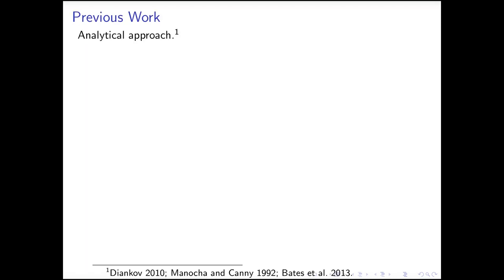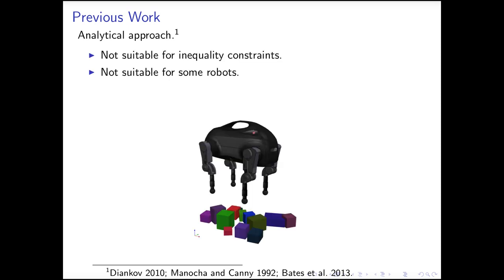There has been a lot of research on solving IK problem. First, there is the analytical approach, that if we only have equality constraints, and if the robot structure is simple, then we can solve the IK problem in closed form. The shortcoming of this approach is that it is not suitable when we have inequality constraints, or when the robots are complicated. For example, if we want to find the posture of the little dog standing on their stepping stones, the region of each stepping stone is described by inequality constraints. Thus, the analytical approach does not apply.